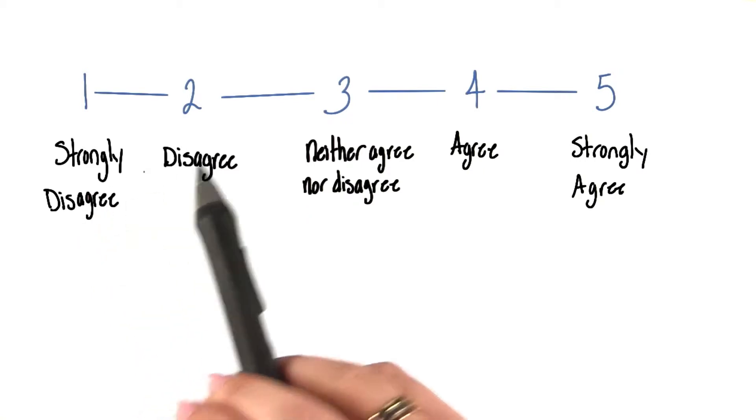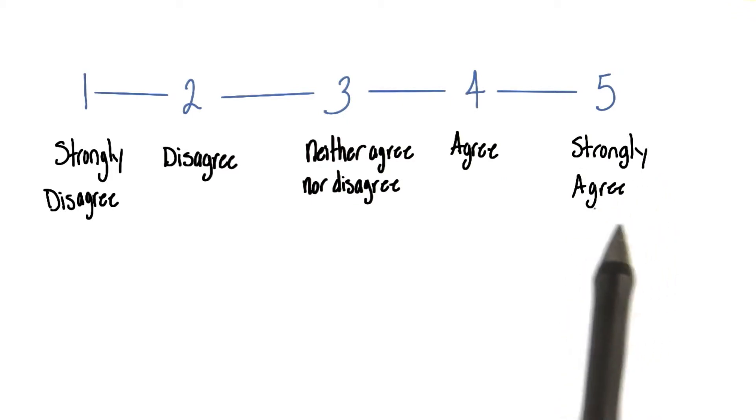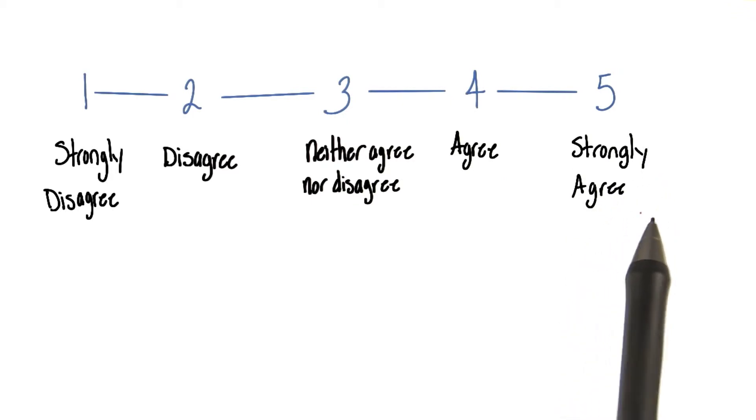such as strongly disagree, disagree, neither agree nor disagree, agree, and strongly agree, they can be scored and summed easily.